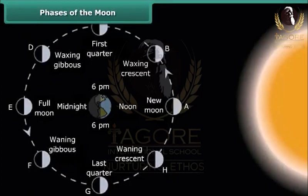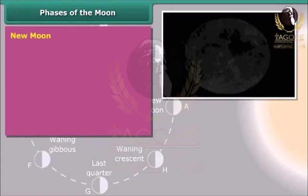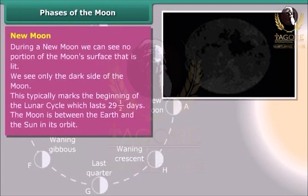Phases of the Moon — New Moon: During a new Moon, we can see no portion of the Moon's surface that is lit. We see only the dark side of the Moon. This typically marks the beginning of the lunar cycle, which lasts 29.5 days. The Moon is between the Earth and the Sun in its orbit.